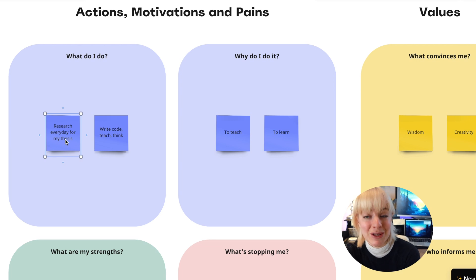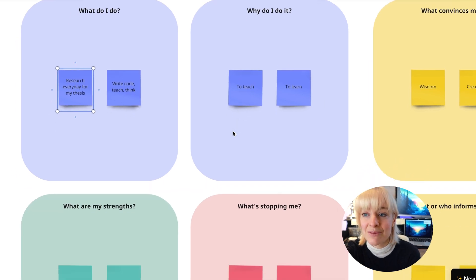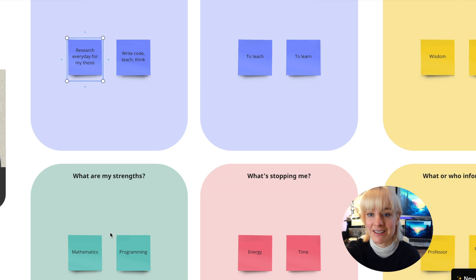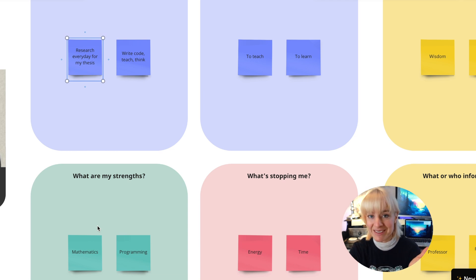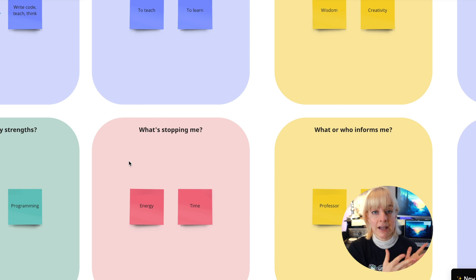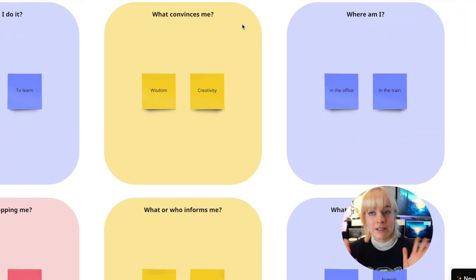The first step is to fill in what you do every day. For me, that's research for my thesis, writing, coding, thinking, and teaching. Then why you do it — my main motivation is to learn and teach as much as possible, and combining both in my PhD is really nice. My strengths are mathematics and programming — I think I'm quite good at both, not the best, but quite good. It's also good to consider what is stopping you; for me, it's probably energy and time, as I like to spend time on other things too. What convinces me are my values — wisdom and creativity.